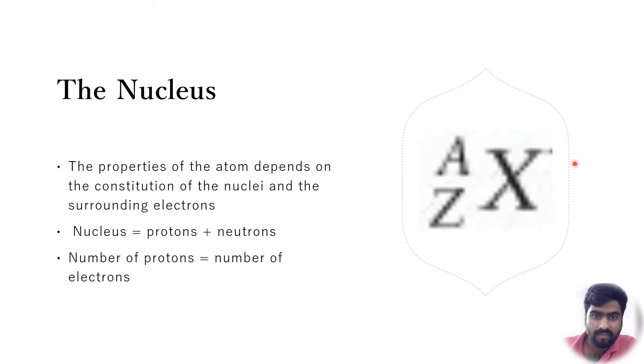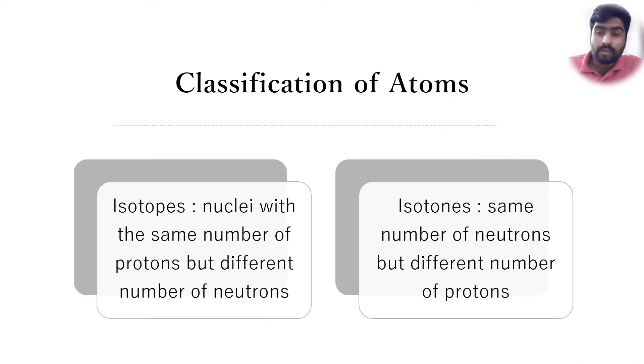Now let's classify atoms on the basis of different proportions of neutrons and protons in the nuclei. Atoms have been classified into the following categories: isotopes, which are nuclei with the same number of protons but different number of neutrons. Isotones, which have the same number of neutrons but different number of protons.